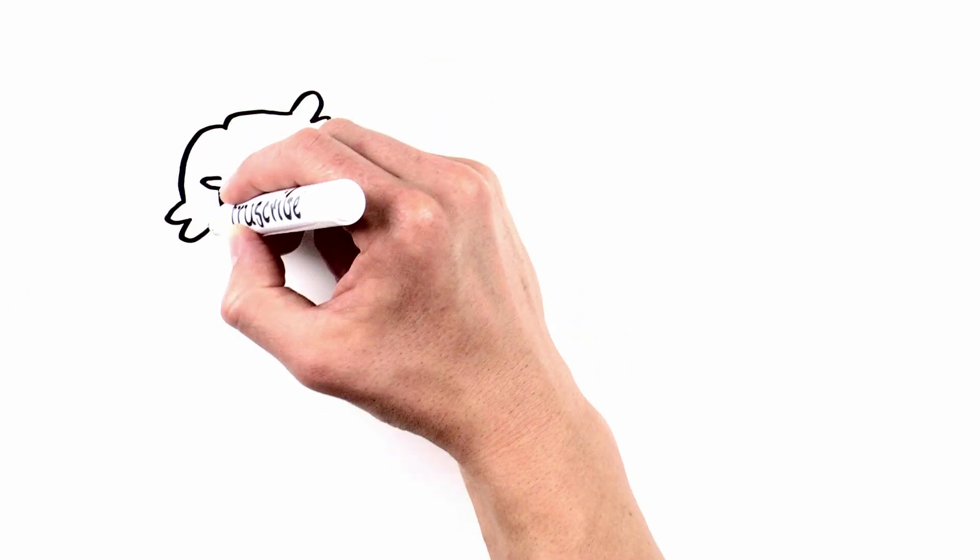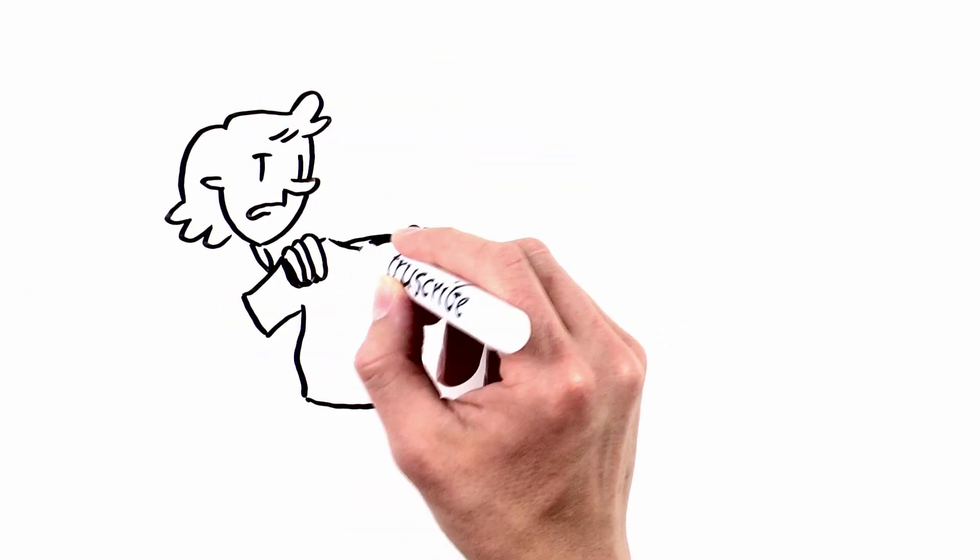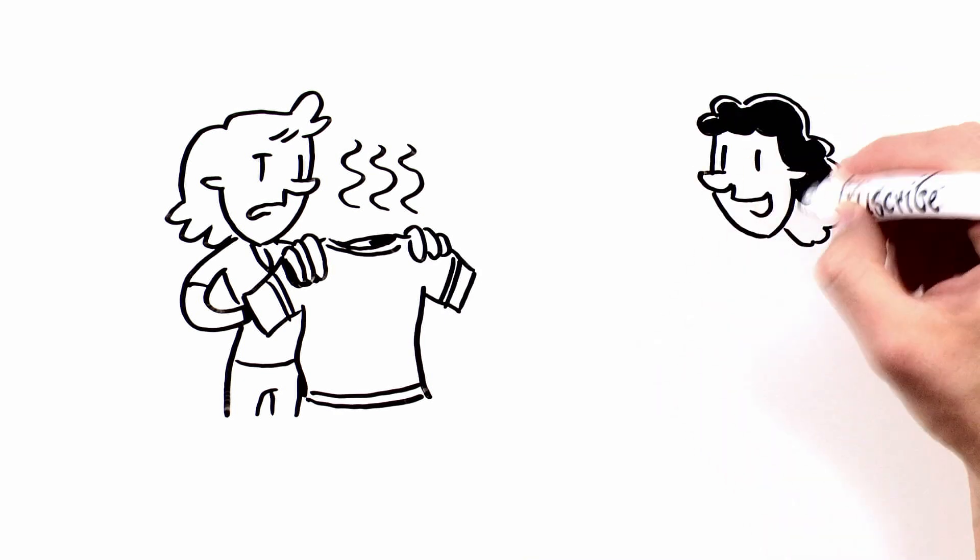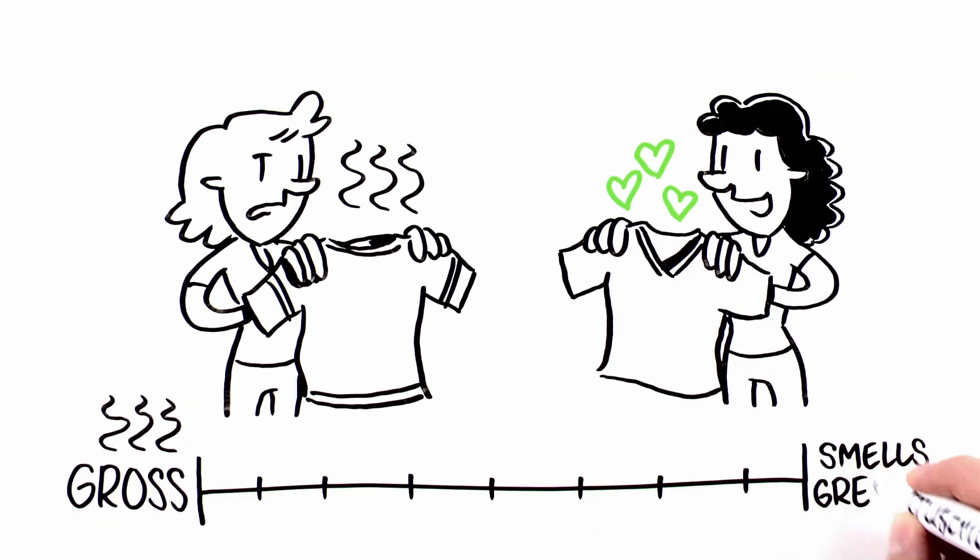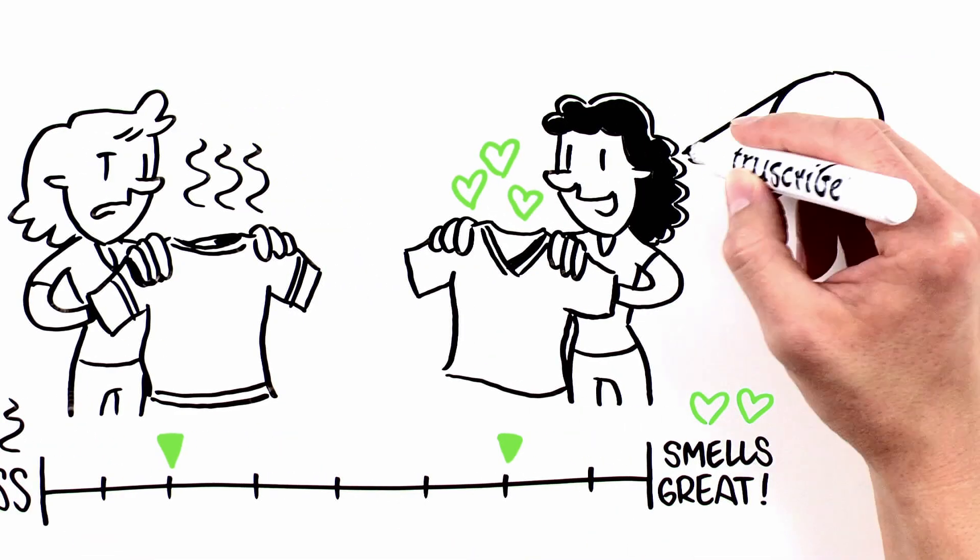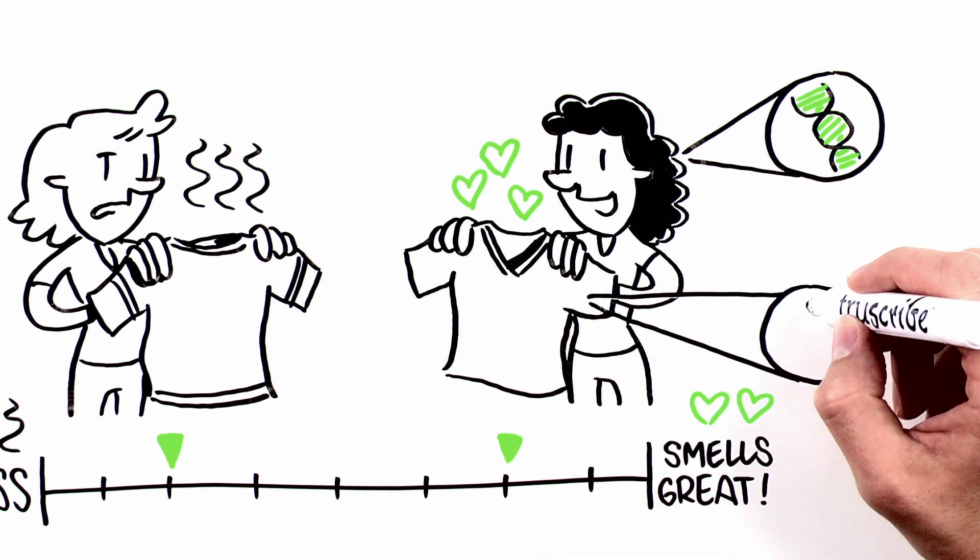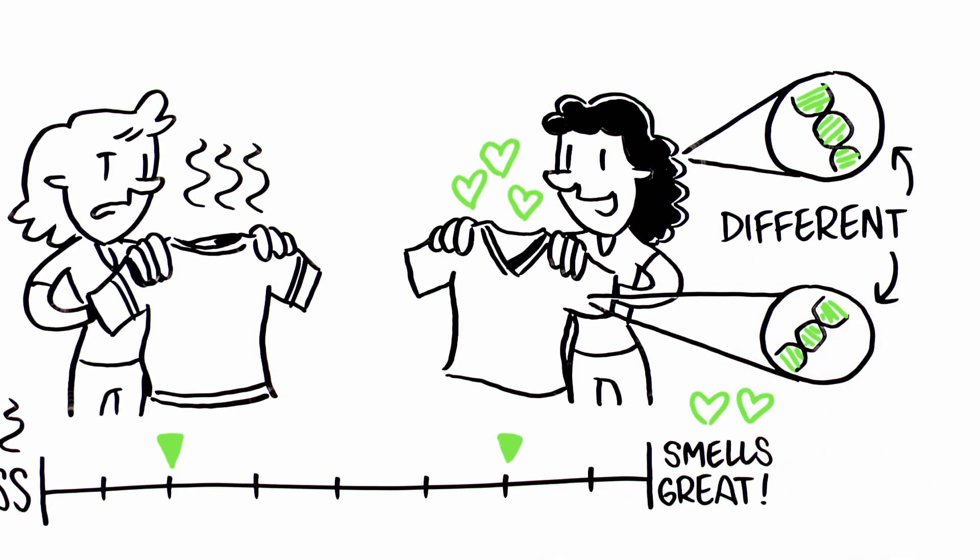In a kind of gross and smelly research study, women were given t-shirts that had been well worn by various men. The women had to rate how attractive they found the smell of the t-shirt. Women liked the t-shirts of the men that they were the most different from on a DNA level.